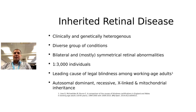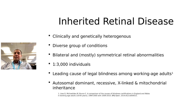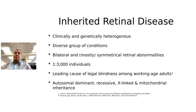As a group of conditions — this umbrella term of genetic disorders that affect the retina and are inherited in nature — the estimated prevalence is around one in three thousand individuals. It is the leading cause of legal blindness amongst working-age adults. So it's not as rare as we think; it's actually rather common. And it's the second form of legal blindness in children.